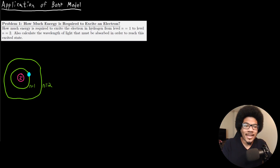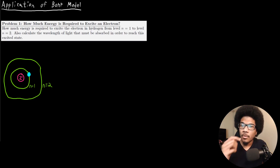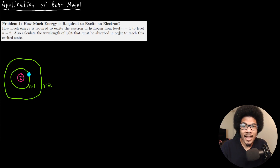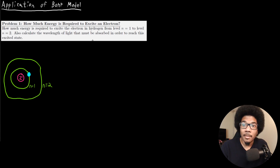In this video, we're going to look at an application of the Bohr model. We're looking at a problem that we're going to use the Bohr model in order to solve. Let's read through the problem first. It says: how much energy is required to excite the electron in hydrogen from the level n equals one to level n equals two? Also calculate the wavelength of light that must be absorbed in order to reach this excited state.